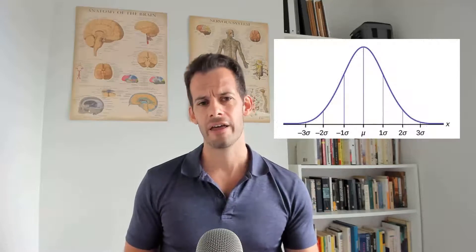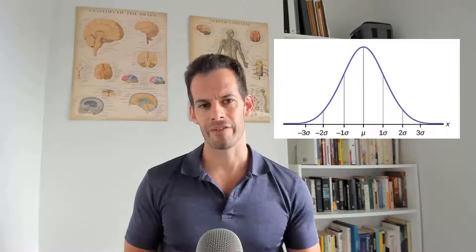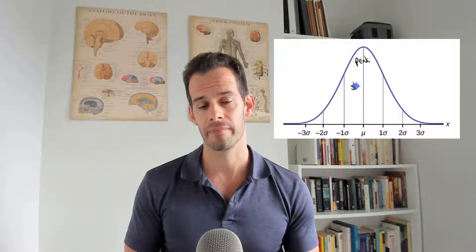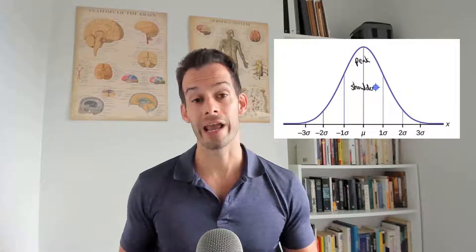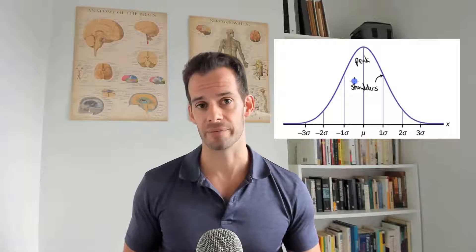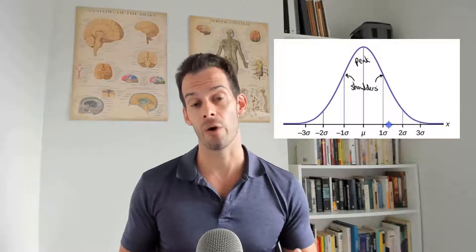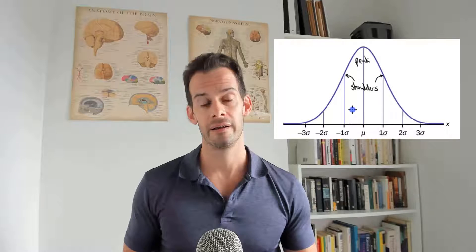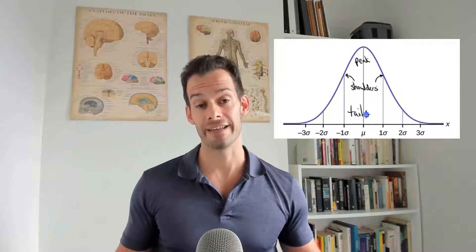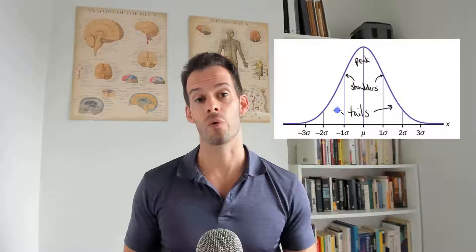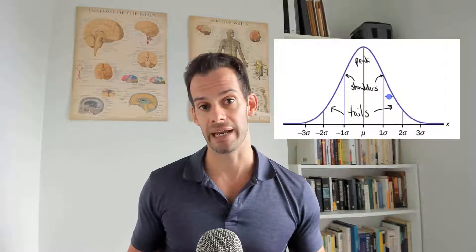Let's start by getting a sense of what I mean by the tails of the distribution. We can think of a distribution as having three sections. We have the center or the peak, and this refers to scores that fall less than a standard deviation away from the mean. Then we move to what we can call the shoulders of the distribution, which refers to scores that fall around one standard deviation away from the mean on either side. And lastly, we have the tails, which refers to the scores that fall more than a standard deviation away from the mean.